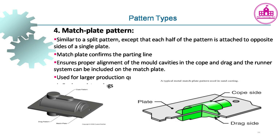Pattern Type 4 - Match plate pattern: Similar to a split pattern, except that each half of the pattern is attached to opposite sides of a single plate. The match plate confirms the parting line, ensures proper alignment of the mold cavities, cope and drag, and the runner system can be included on the match plate. Used for larger production quantities.